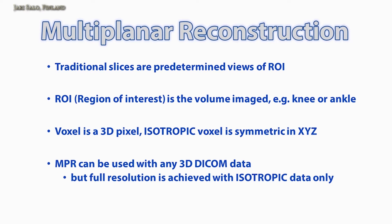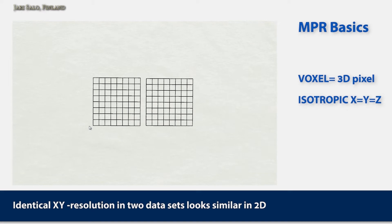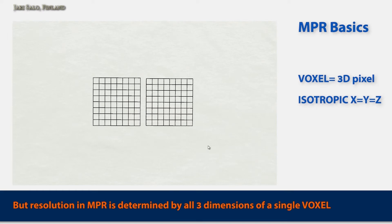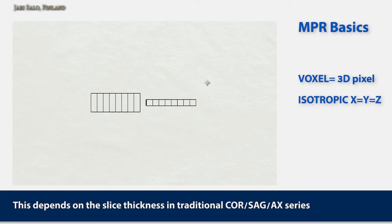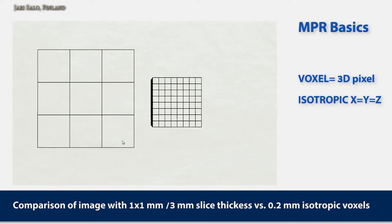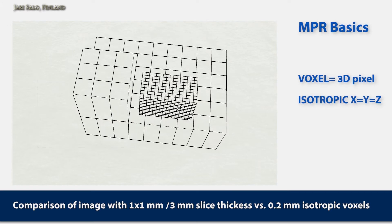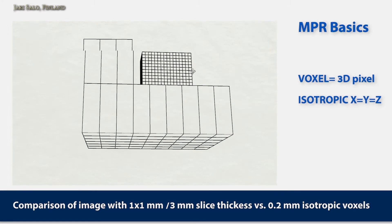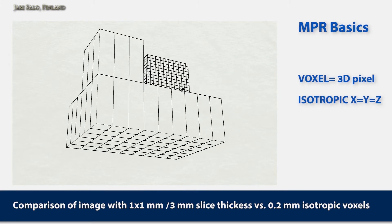MPR can be used with traditional data also, but there can be some issues. Here we have two data sets with initially the same resolution in X and Y directions, but when we rotate them, we can see that on the left side we have fixed slices and on the right side we have isotropic voxels. With isotropic data you retain full resolution, while the slice-based data shows degraded slices. For example, one millimeter by one millimeter by three millimeters on the left represents routine MRI in many clinics, compared to the fine isotropic data with 0.2 millimeter resolution. The difference in spatial resolution is remarkable.